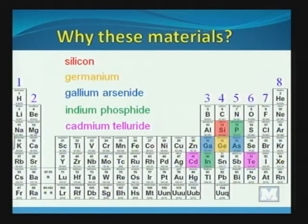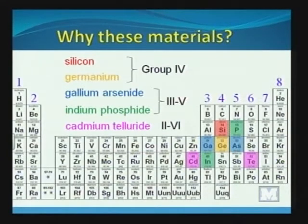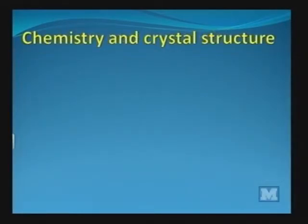Cadmium telluride is a little bit different, but it has basically cadmium, which has two valence electrons, and tellurium, which has six valence electrons. So if we lump these into categories, we have group four semiconductors, three-five semiconductors, and cadmium telluride as an example of a two-six semiconductor. Many semiconductors fall within this category. So now we have a pattern. What does this tell us about why these materials would form semiconductors and not metals?